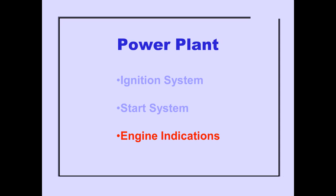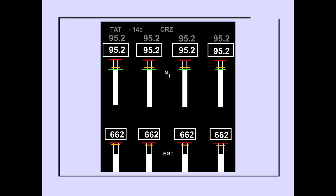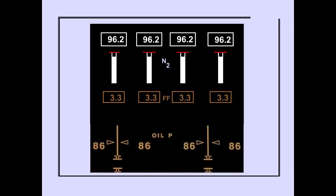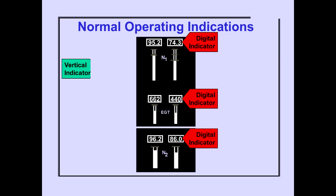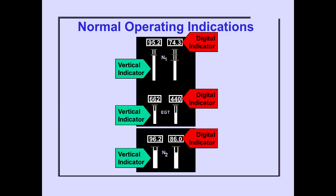Let's discuss the engine indications used to monitor engine start. N1 and EGT are displayed on ICAS as part of primary engine indications. N2 is displayed on ICAS as part of secondary engine indications. Normal operating indications for N1, EGT, and N2 are displayed by white digital and vertical indicators. The digital indicators show numerical value, while the vertical indicators move to show relative value.